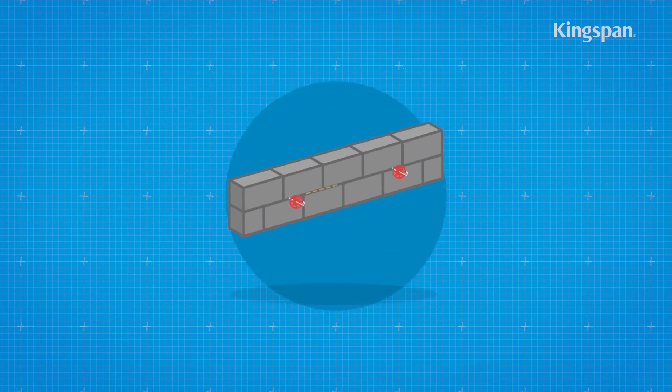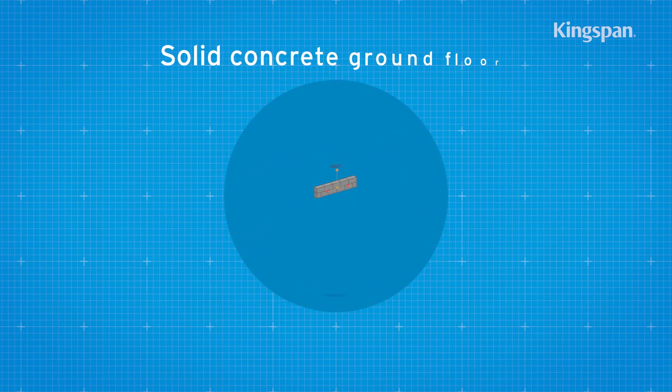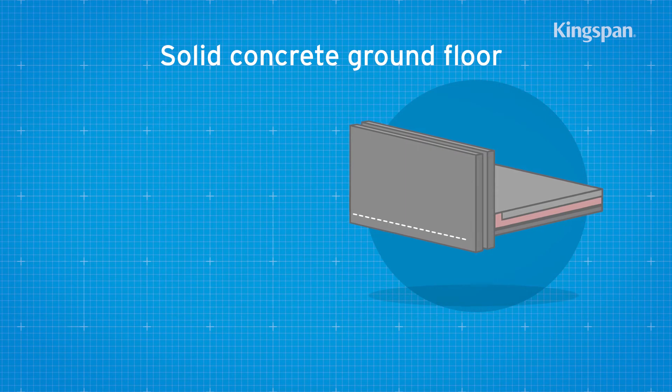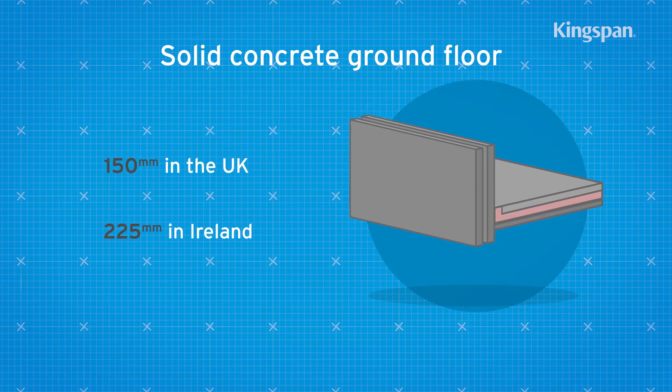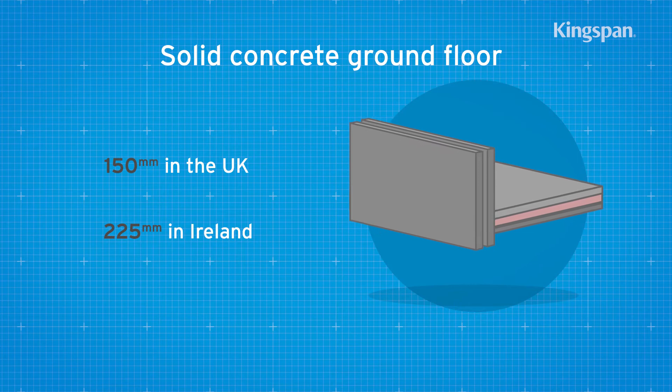Install wall ties in the inner leaf at 600 mm horizontal centers. For solid concrete floors, wall ties start at either one course of blockwork below the damp-proof course or, depending on your location, a specified distance below the top surface of the ground floor perimeter insulation upstand.